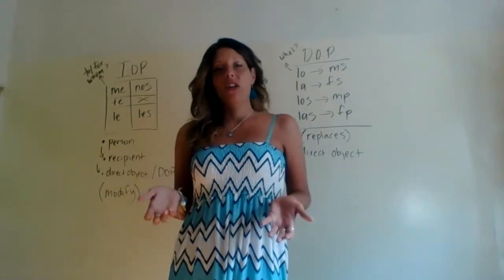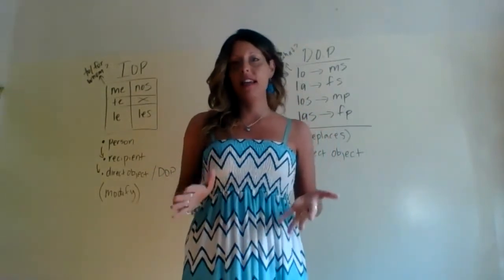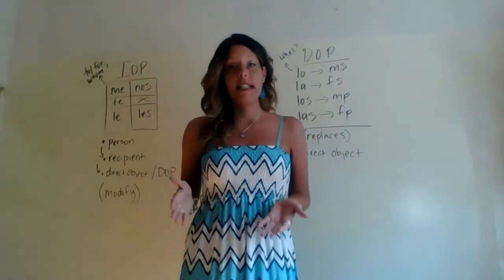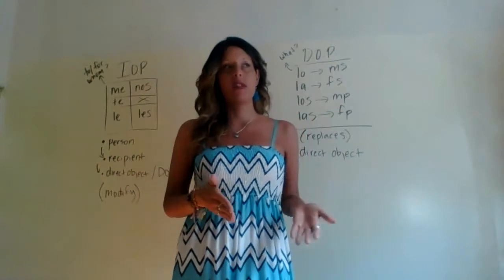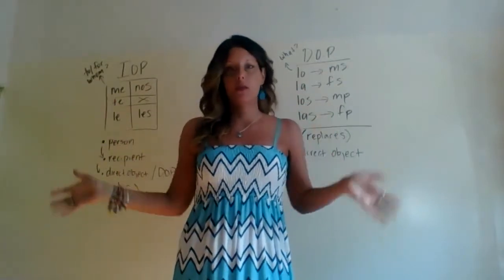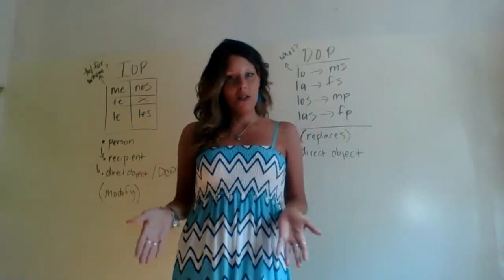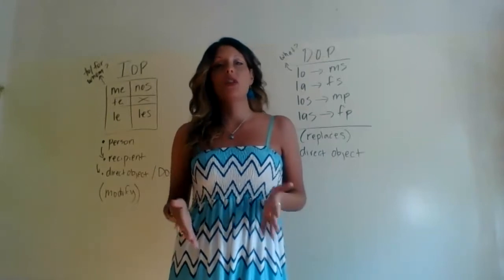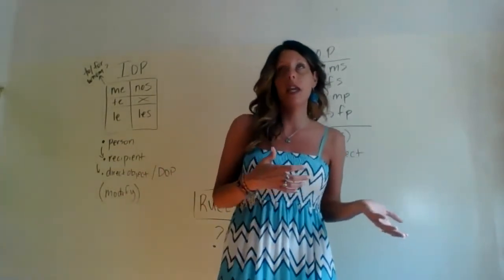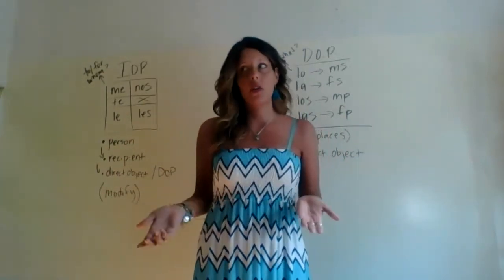By this point in your Spanish language career, you should have a clear and mastered understanding of what IOPs — indirect object pronouns — and DOPs — direct object pronouns — are. On the other hand, having way too many years of experience teaching this level, I know that there are lots of students, sometimes the majority, who still are confused about when to use an IOP, when to use a DOP, where it goes, does it go in front of the verb, does it go after the verb, what's the difference?